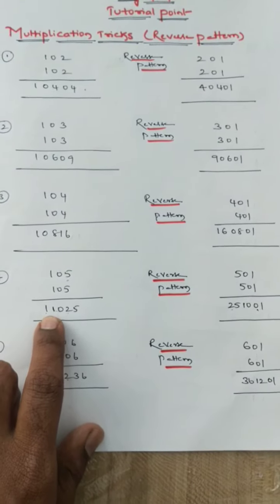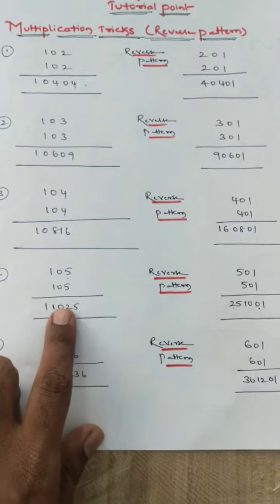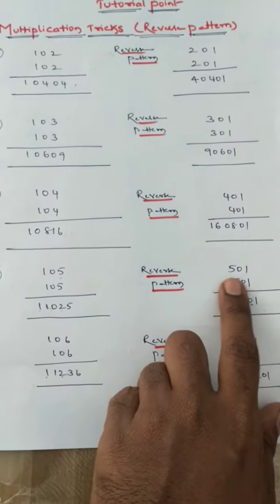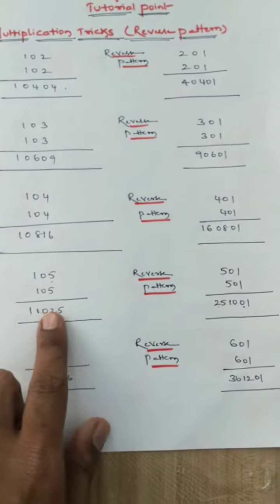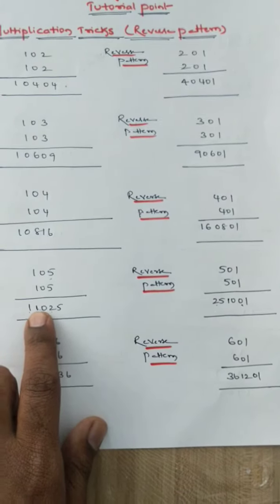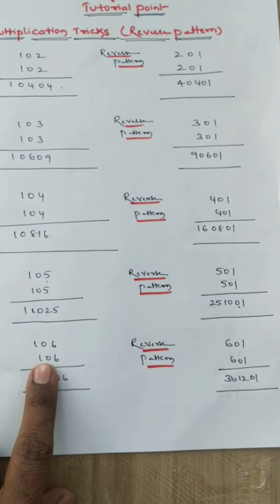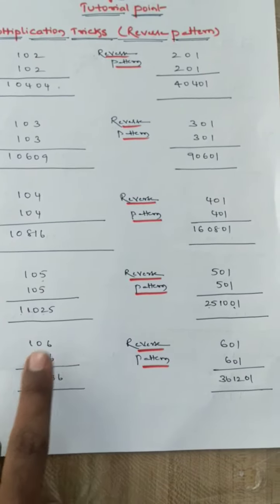105 into 105, you will get 1, 1, 5 plus 5 is 10, 5 into 5 is 25. If you reverse the number, 501 into 501 is 25, 10, 0, 1.